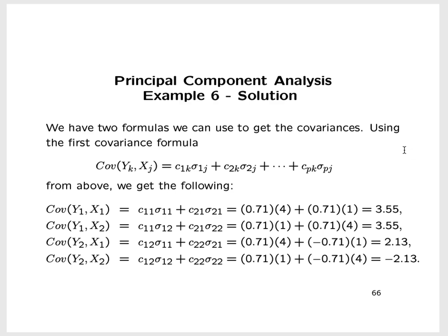Using the first covariance formula, the covariance between the first principal component y1 and first original variable x1 is c_11·σ_11 + c_21·σ_21, which equals 3.55. The covariance between y1 and x2 is c_11·σ_12 + c_21·σ_22, which also equals 3.55. The covariance between the second principal component y2 and x1 is c_12·σ_11 + c_22·σ_21, which equals 2.13.